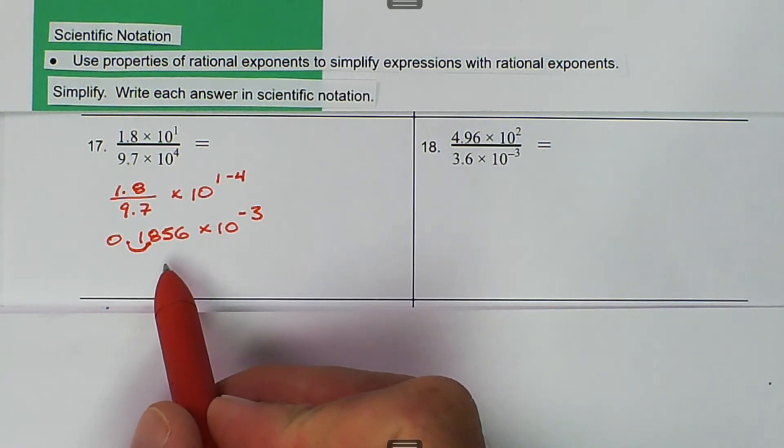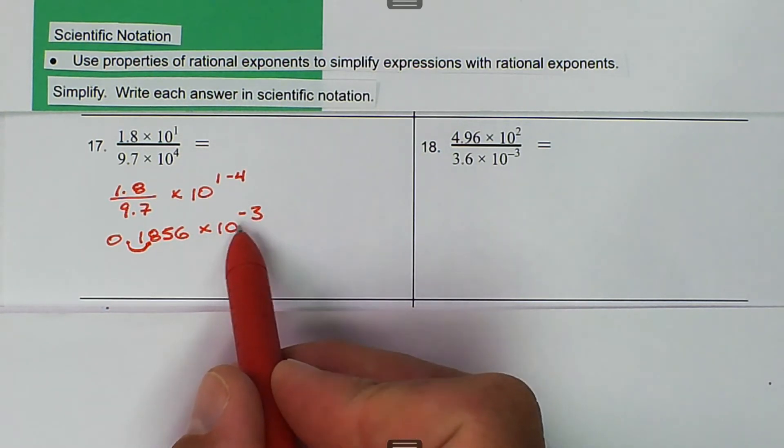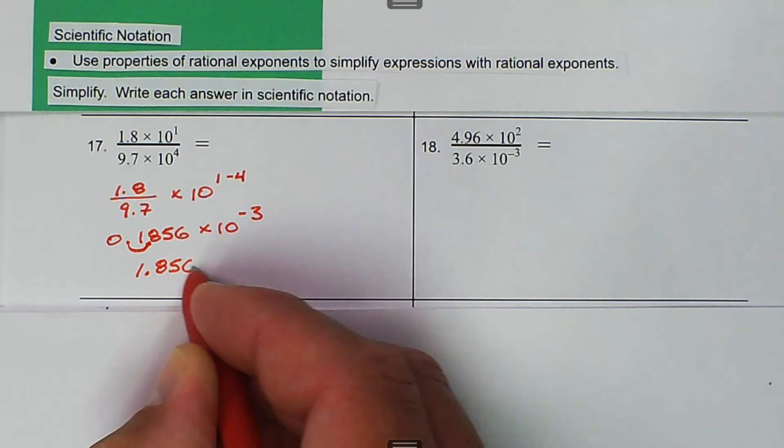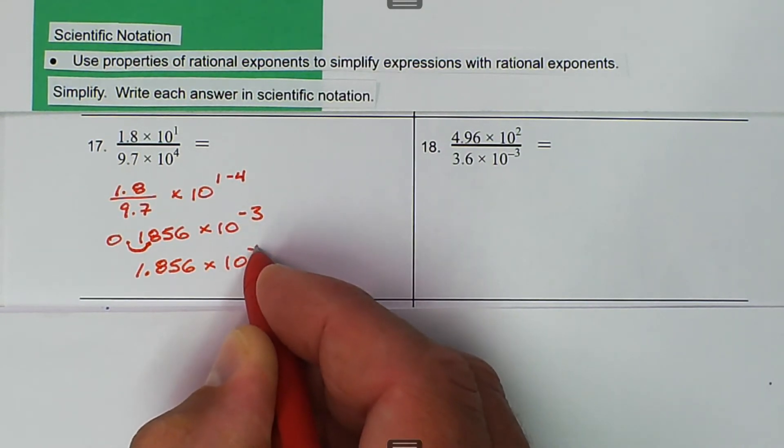When we do that, we're actually going to make the exponent decrease further, so we have to go to negative 4. So it's 1.856 × 10^(-4).